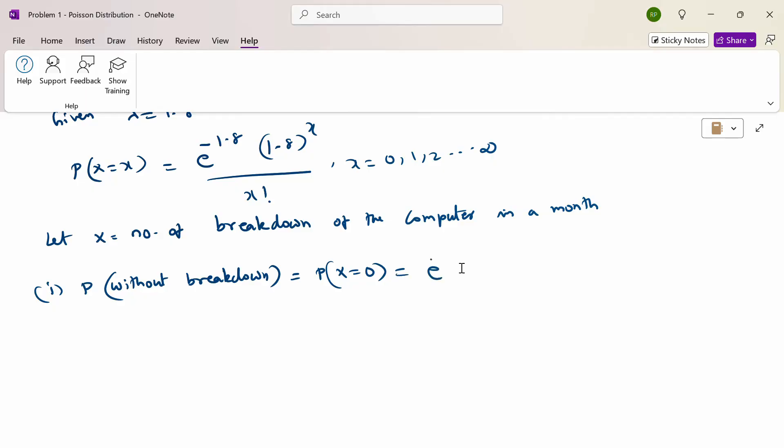E power minus 1.8, 1.8 to anything power 0 equals 1, divided by 0 factorial equals 1. Therefore, using the calculator, e power minus 1.8 value is 0.1653.